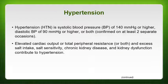The two determinants of blood pressure are cardiac output and peripheral resistance. Blood pressure is what allows oxygen to perfuse through our vessels — it's literally the pressure of the blood against the walls of the blood vessels. When you have elevated cardiac output or total peripheral resistance, or both, other things can also contribute to hypertension: excessive salt intake, salt sensitivity, chronic kidney disease, and kidney dysfunction.